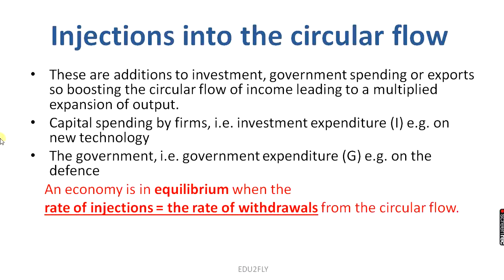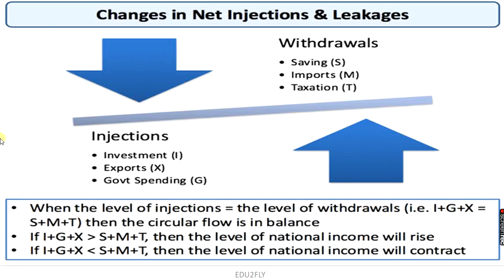In any economy — whether two-sector, three-sector, or four-sector — equilibrium is very important. Equilibrium occurs when injections equal withdrawals, that is, leakages equal injections. In the diagram, withdrawals are of three types: savings, imports, and taxation; and injections can be investment, exports, and government spending. If injections are more than withdrawals, national income will rise; whereas if injections are less than withdrawals, national income will contract.